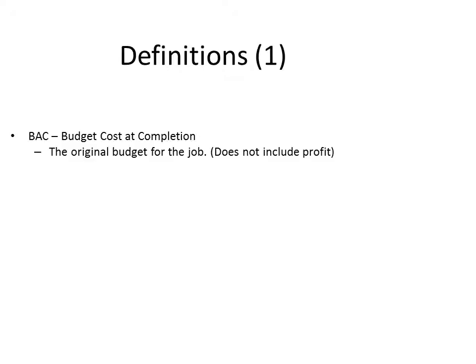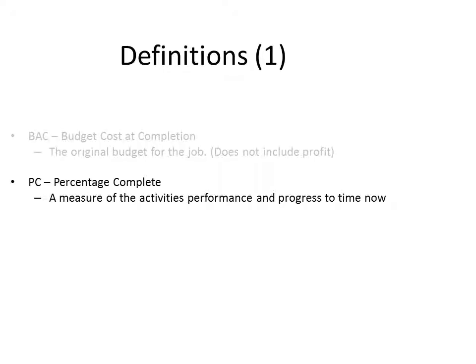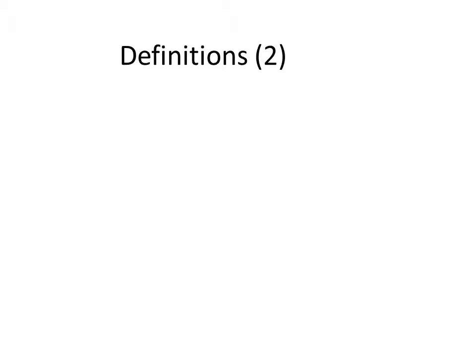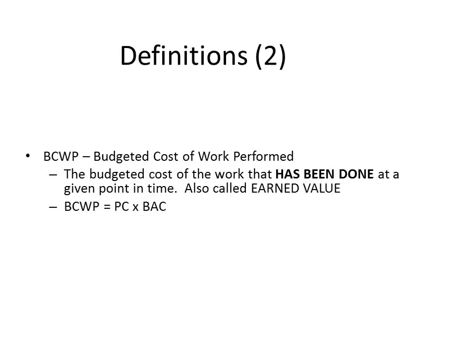Starting with key definitions: Budgeted Cost at Completion (BCAC) is basically the original budget for any job and does not include profit. Percentage complete is a measure of an activity's performance and progress to date. Budgeted Cost of Work Schedule (BCWS) refers to the work that should have been done at any given point in time.